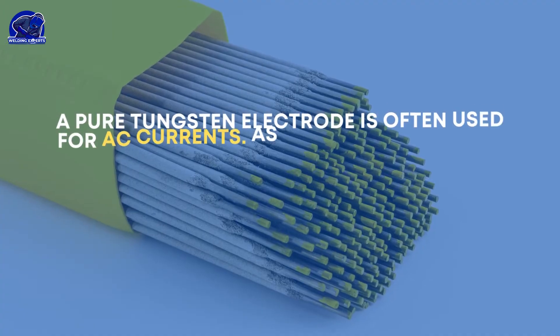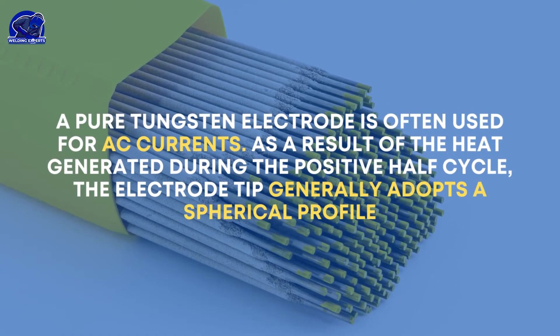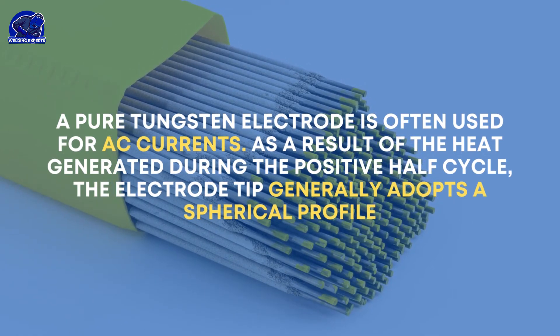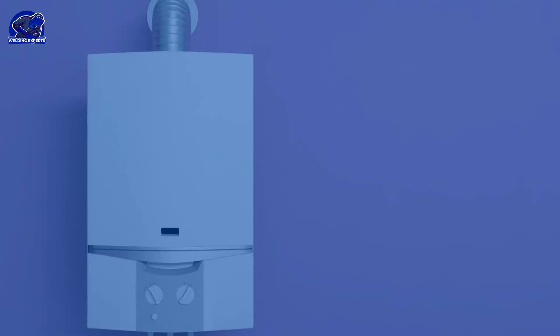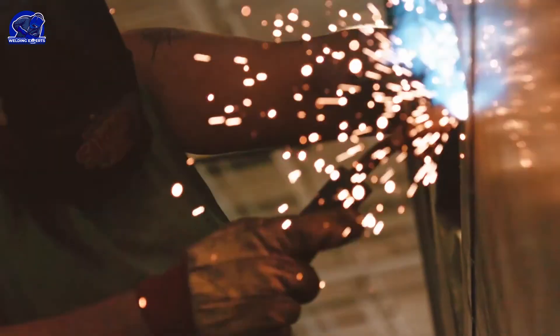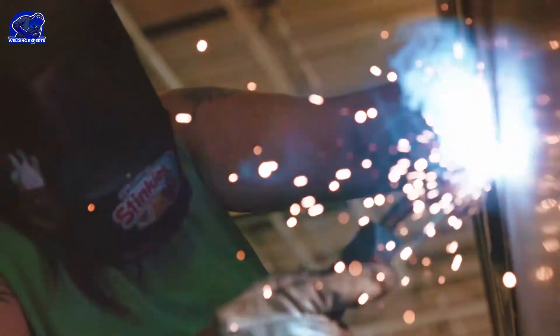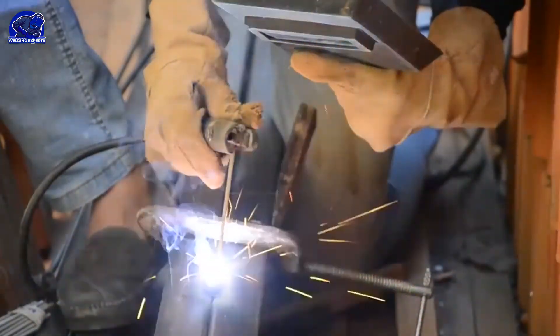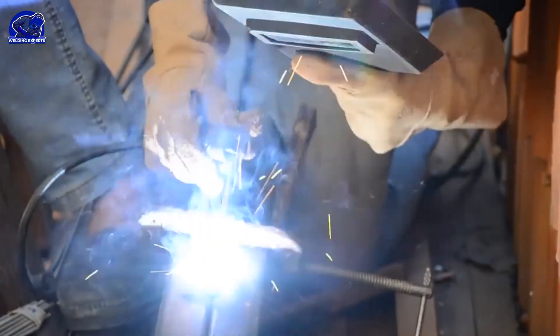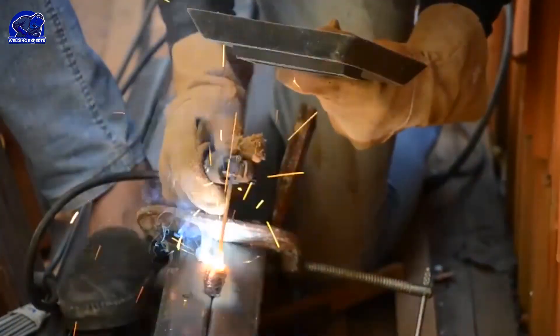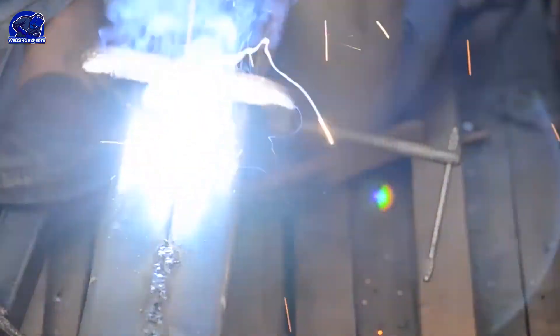A pure tungsten electrode is often used for AC currents. As a result of the heat generated during the positive half cycle, the electrode tip generally adopts a spherical profile. Gas shielding: the torch nozzle should be equipped with a gas lens to ensure laminar gas flow. Gas protection will be improved for sensitive welding operations such as welding vertical corner and edge joints and on curved surfaces. Additionally, a wide range of nozzles is available to ensure a variety of gas coverage. The choice of nozzle is largely determined by the electrode diameter and the accessibility of the assembly to be welded.